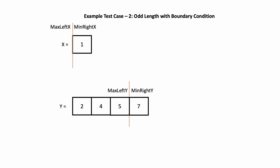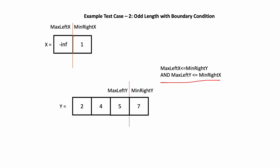Let's start by partitioning the arrays at the middle index. If you observe, max_left_x is out of bounds in array x. In this scenario, we consider max_left_x as negative infinity. We check the condition, which is not satisfied. To satisfy it, we need to make min_right_x bigger, so we move the partition of x in the right direction.